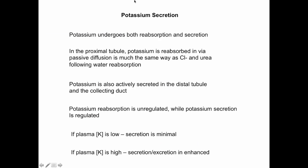Potassium is an interesting substance because it undergoes both reabsorption and secretion. Potassium reabsorption occurs at the proximal tubule via passive diffusion, the same way we saw chloride and urea. About 50 percent of the potassium that gets filtered ends up getting reabsorbed through this passive mechanism in the proximal tubule.